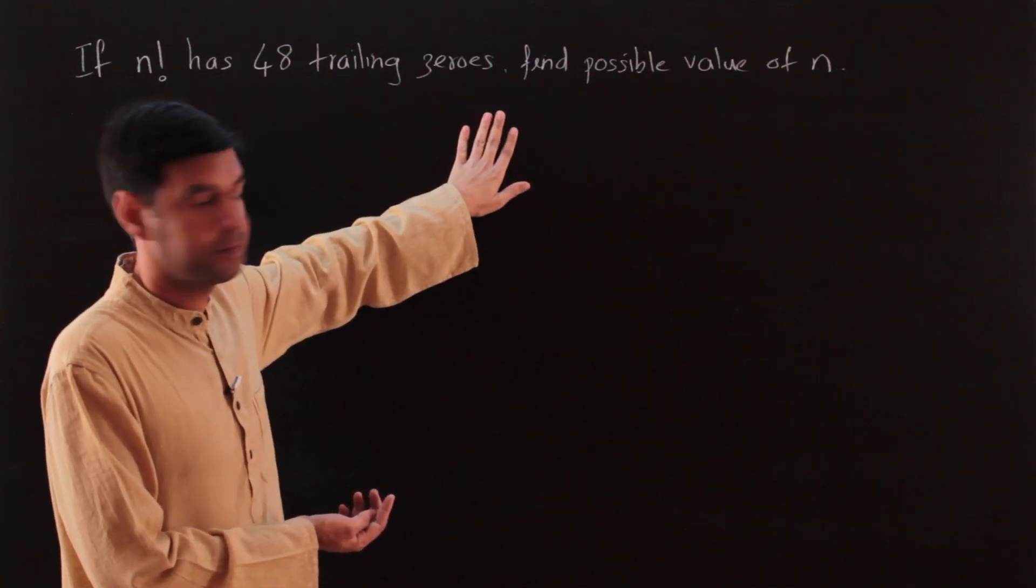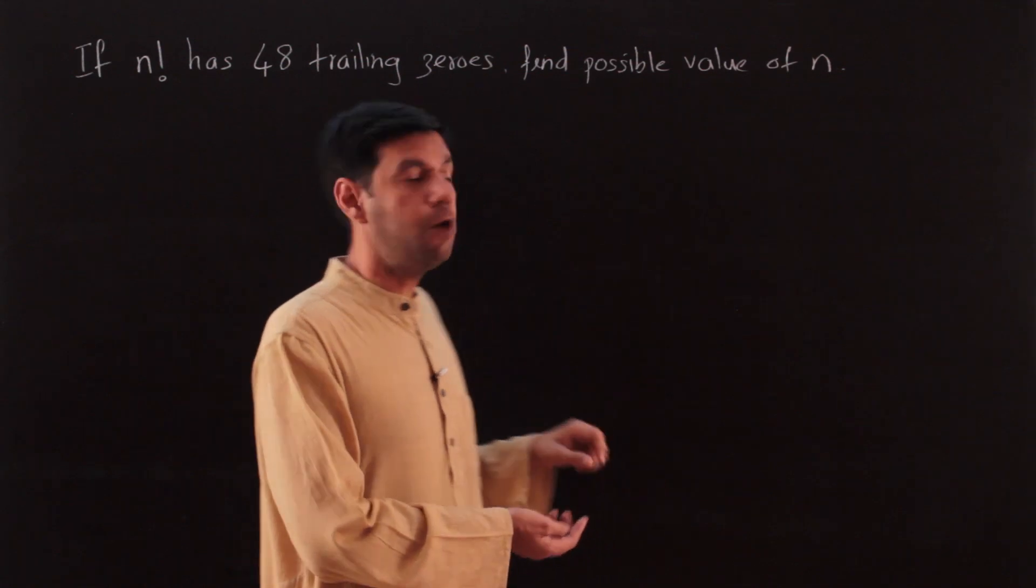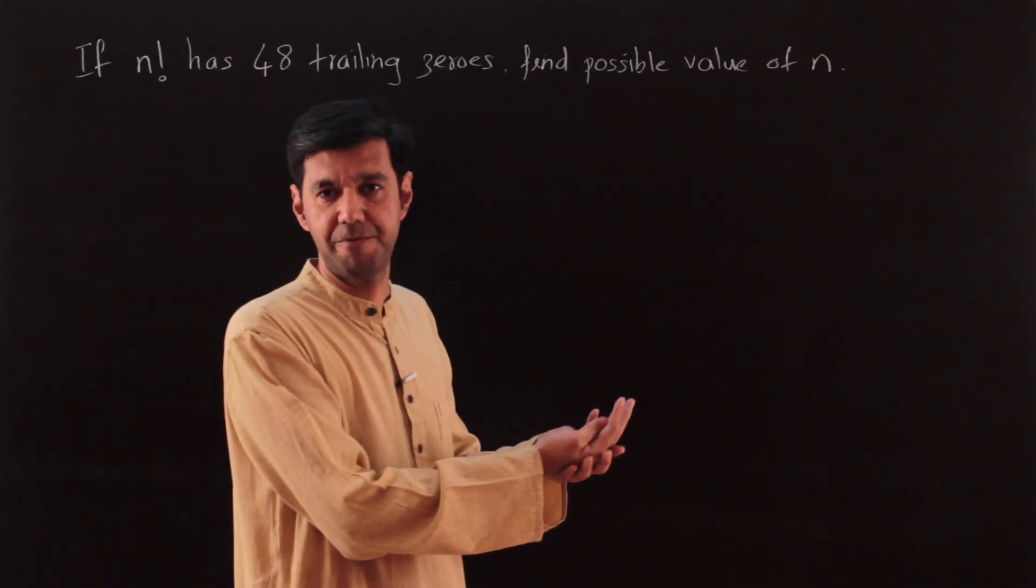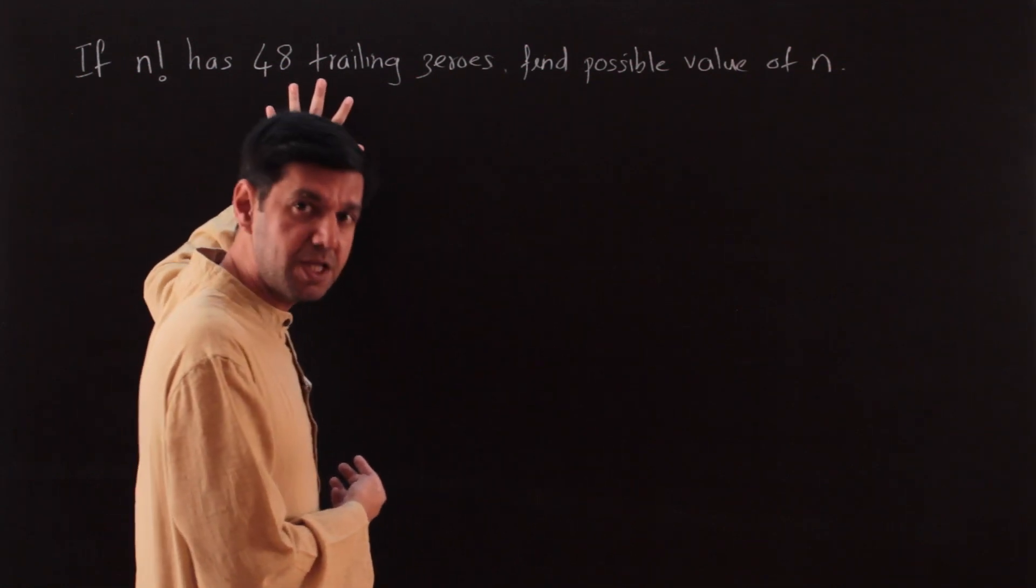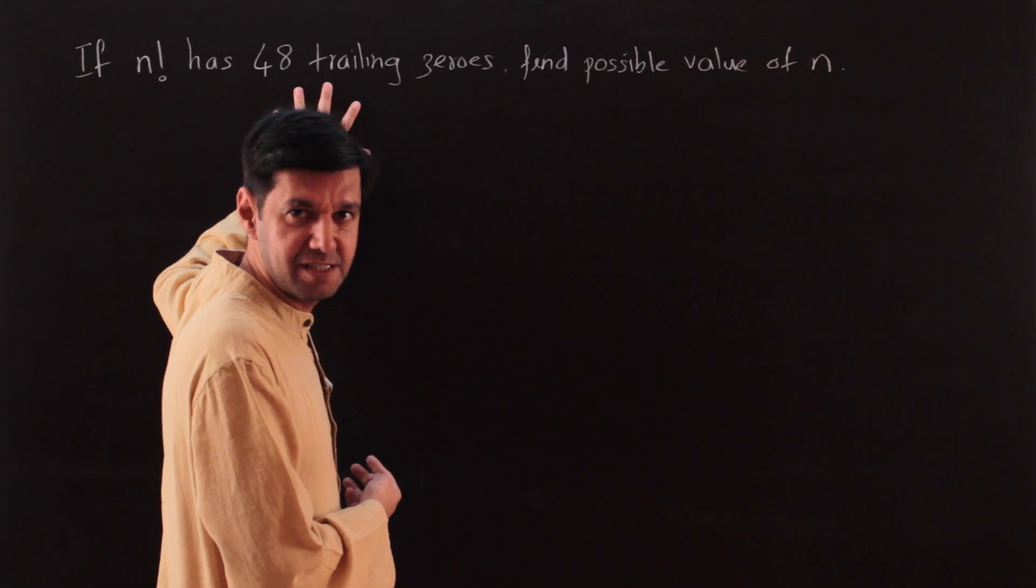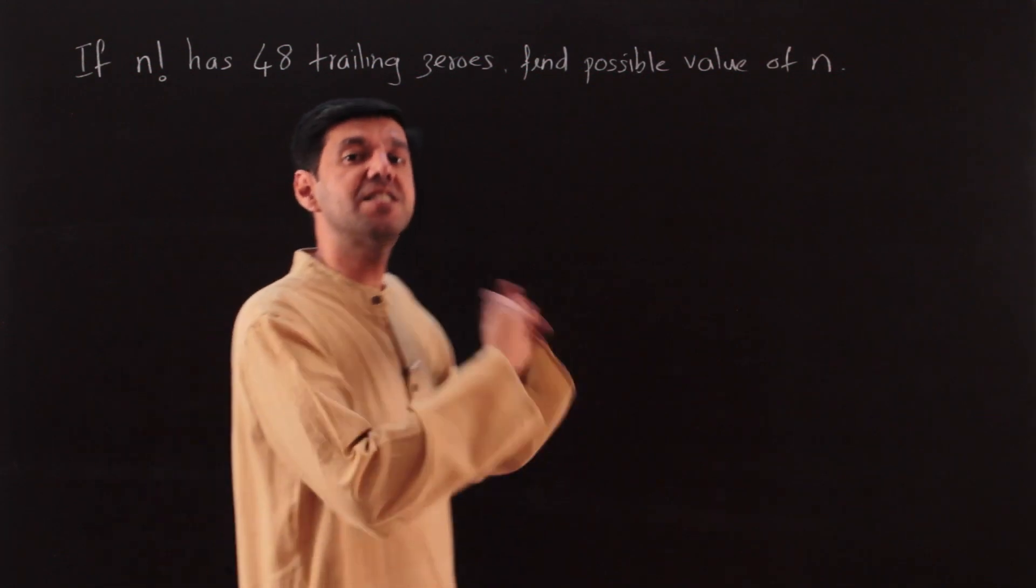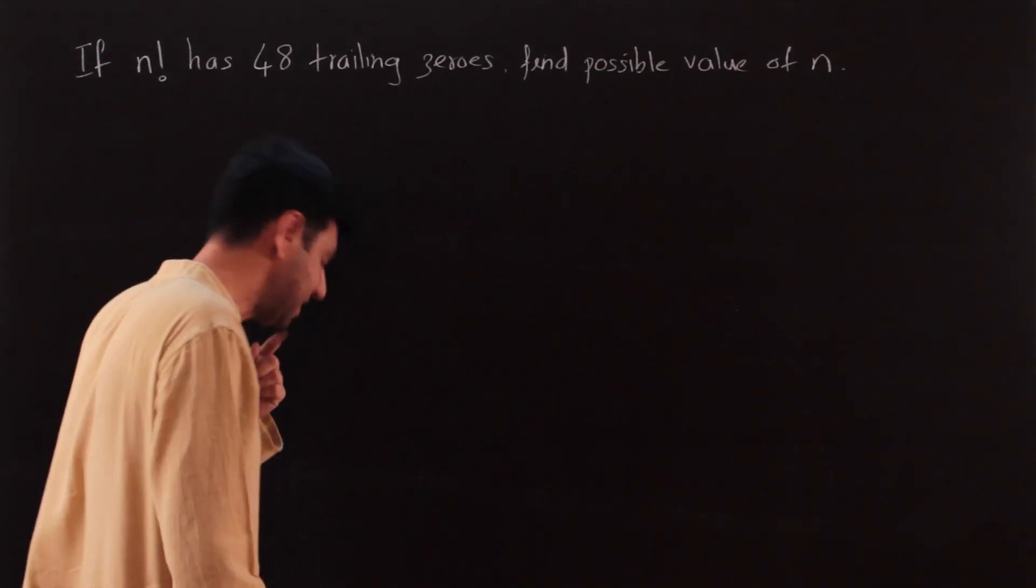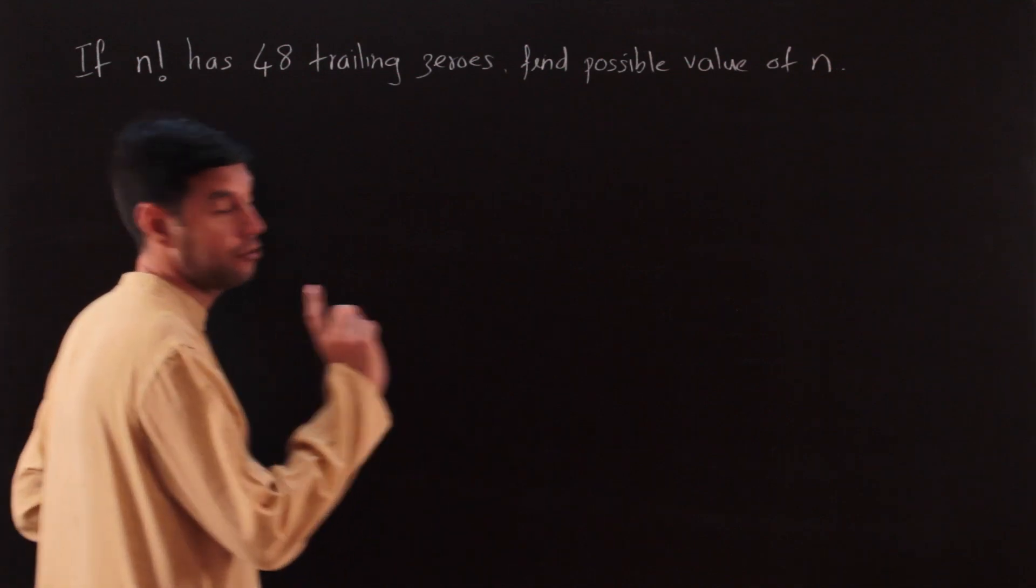For example, in this question: if n factorial has 48 trailing zeros, find possible values of n. Till now we knew the factorial and had to find the highest power of a prime in it. What is now being told to us is we know the highest power of 5 is 48, and what is the value of the factorial? So we are sort of going reverse, and this can get a little dicey.